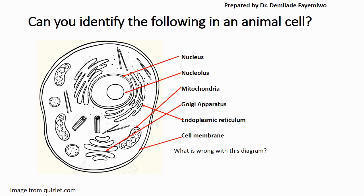And that is the cell membrane. The cell membrane is a partially permeable membrane that restricts the movement of molecules in and out of the cell. A question I usually ask students when I show them this image is: what is wrong with this diagram? It is the fact that it shows the animal cell as having two membranes. The animal cell only has one membrane, so please do not make this mistake.